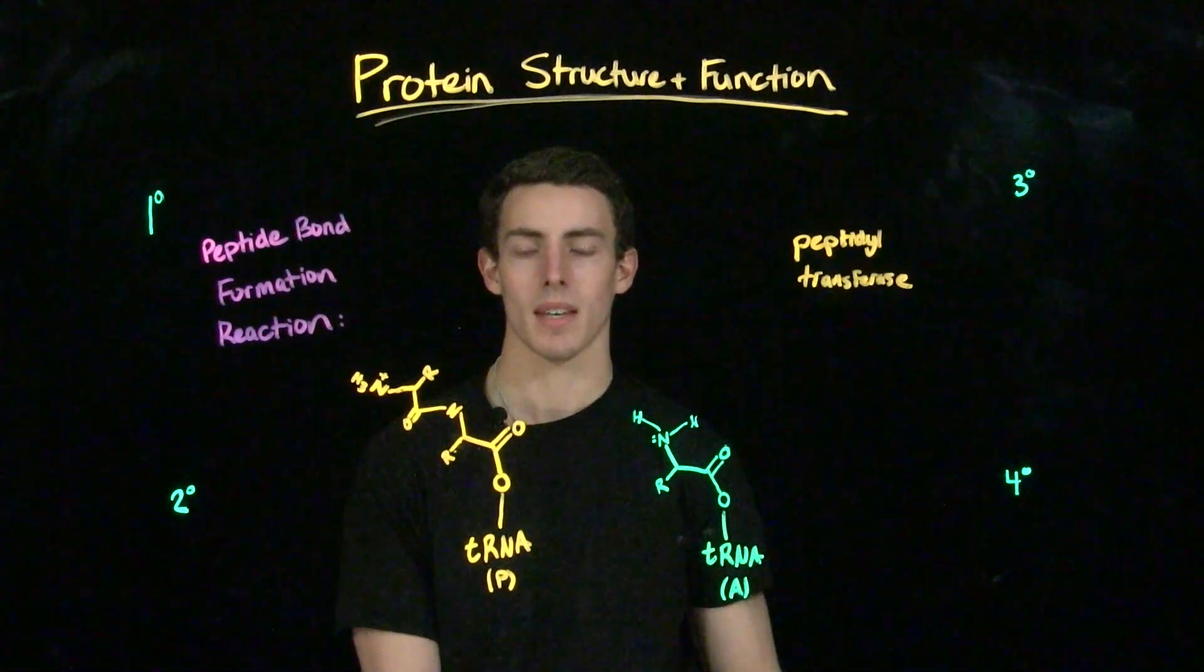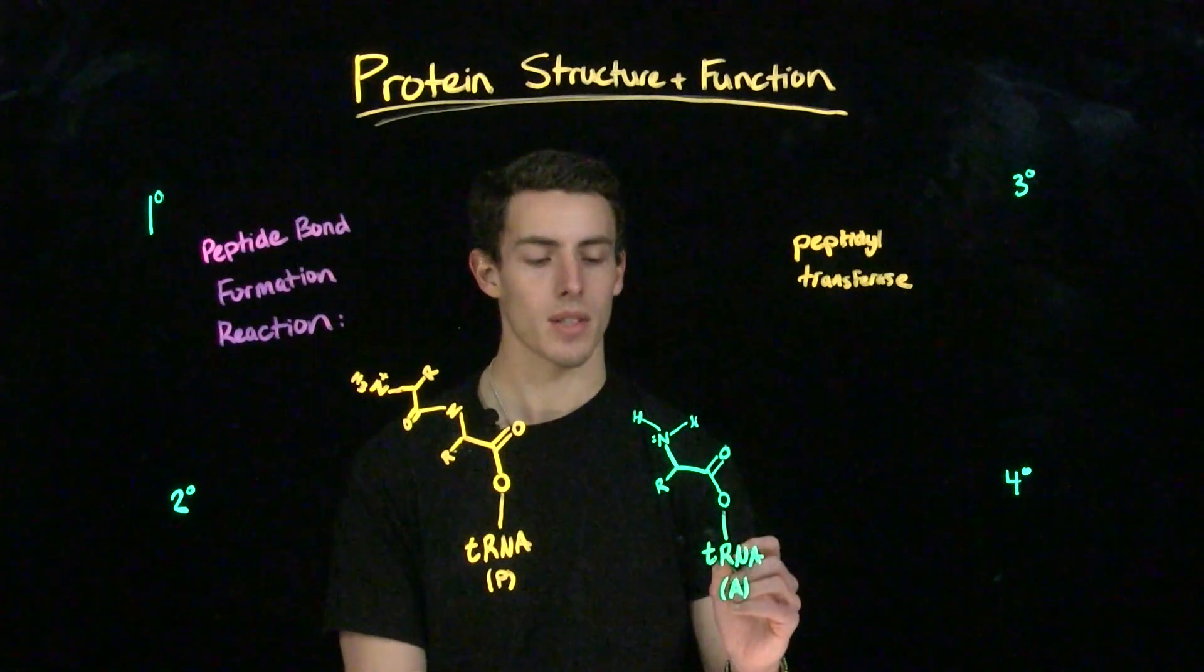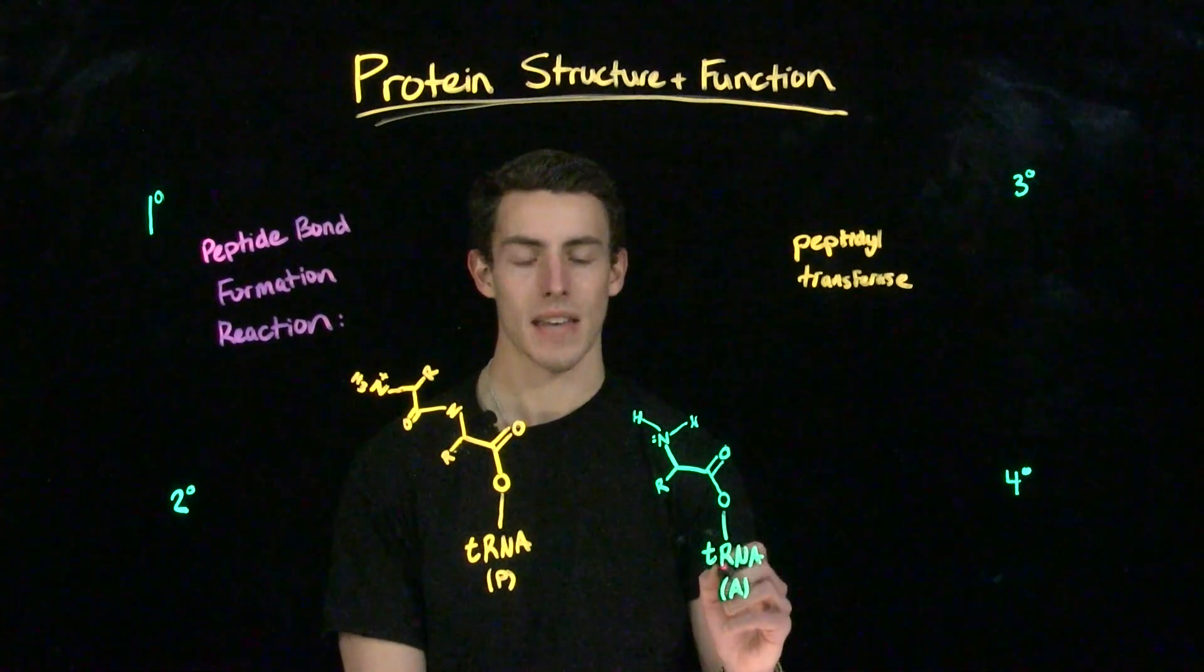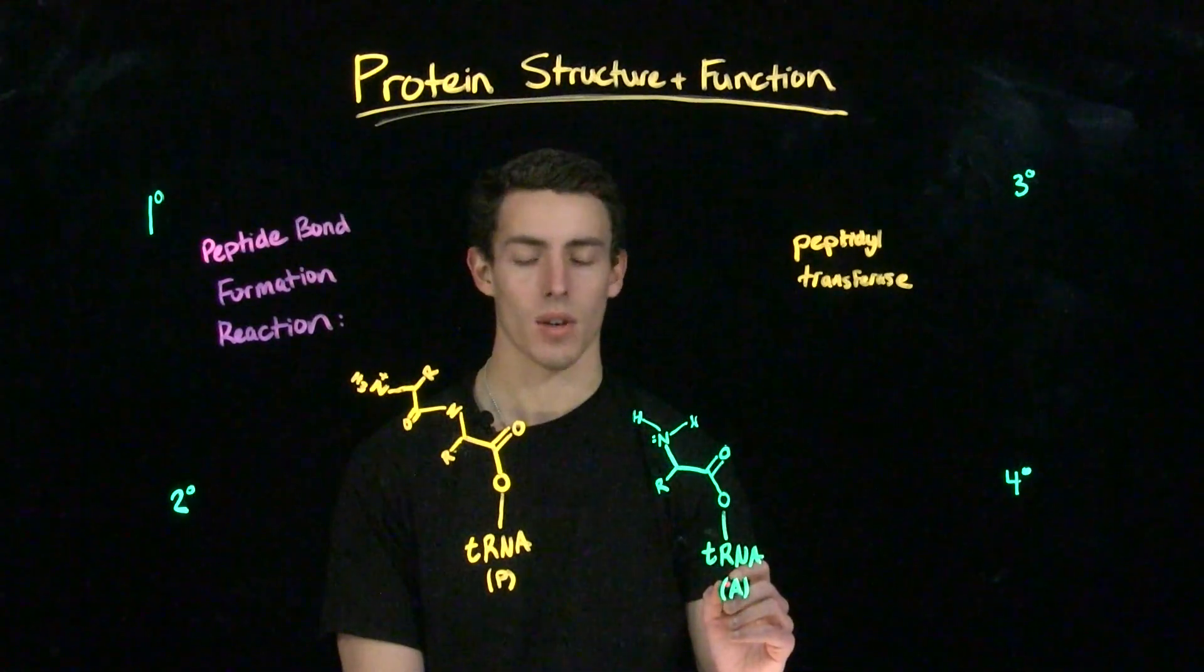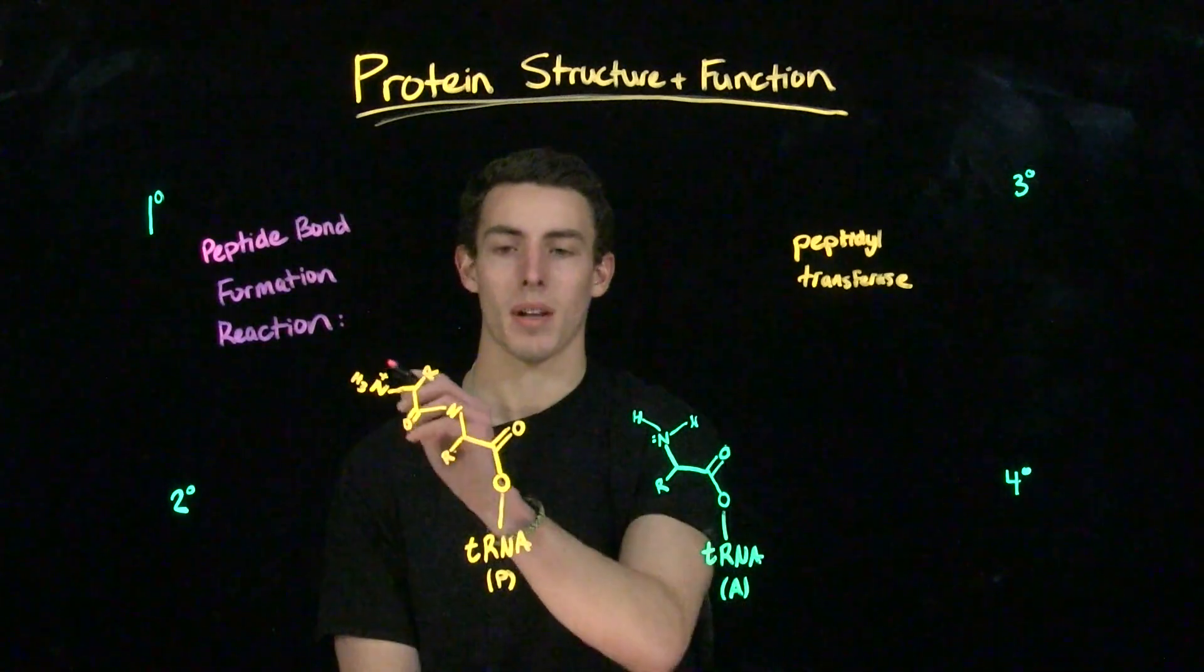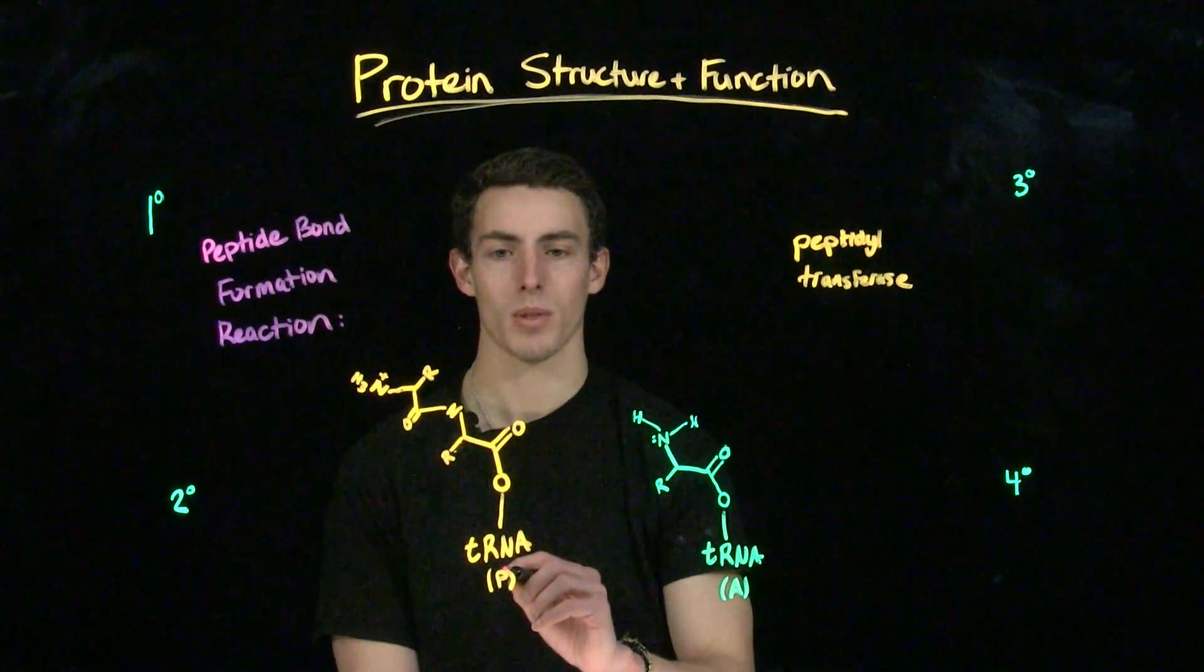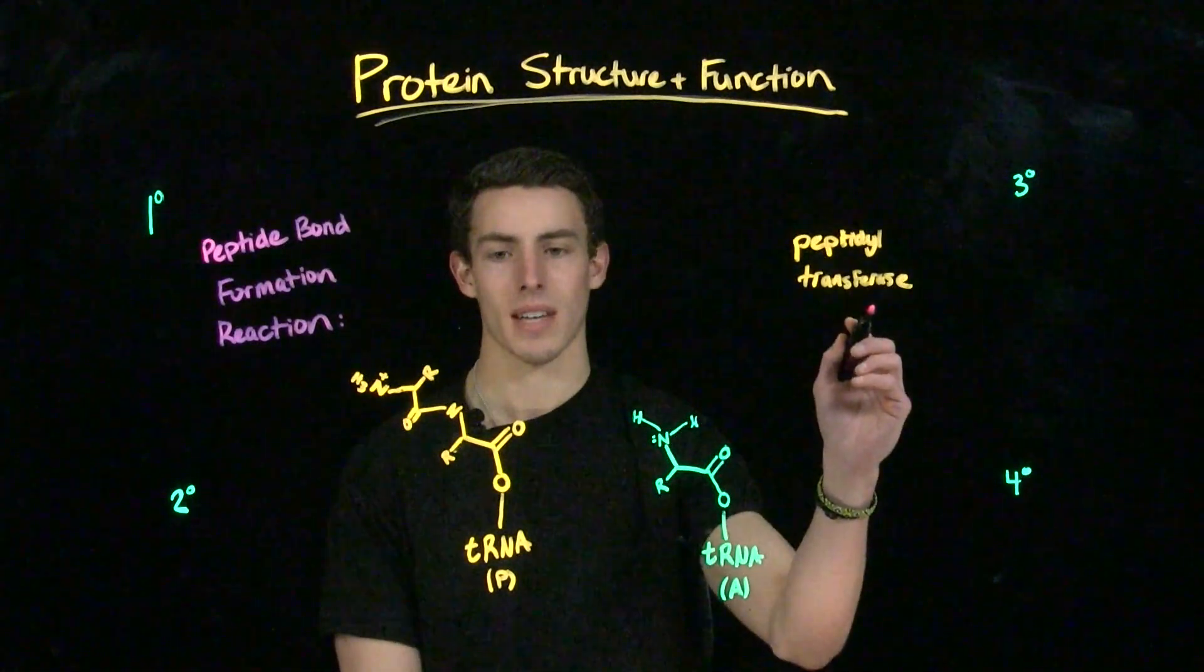Peptidyl transferase activity is going to be in the P site of a ribosome. During translation, an aminoacyl tRNA will bind into the A site, or the aminoacyl site of an RNA, and it will form a peptide bond with an existing polypeptide in the peptidyl site. Now, the peptidyl site of a ribosome is roughly where this peptidyl transferase activity is.